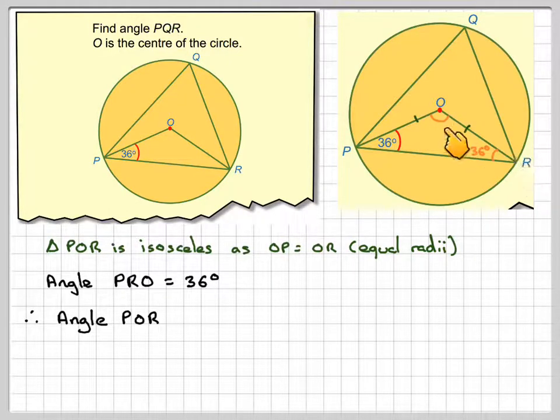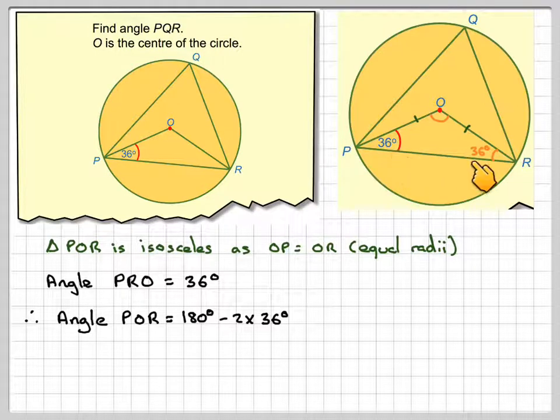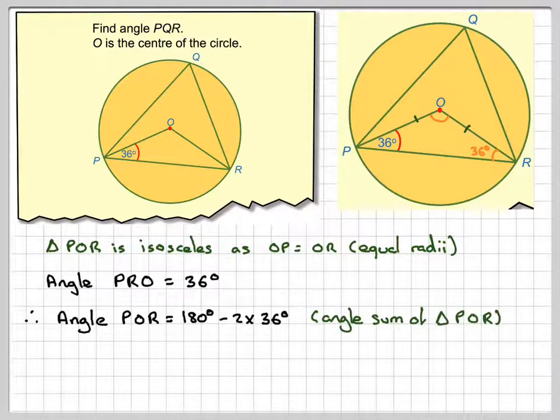And then angle POR, this one here, will be 180 minus 2 times 36, or 180 minus 36 minus 36. The angle sum of triangle POR is going to be 108.